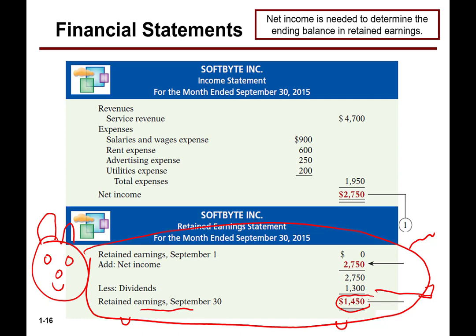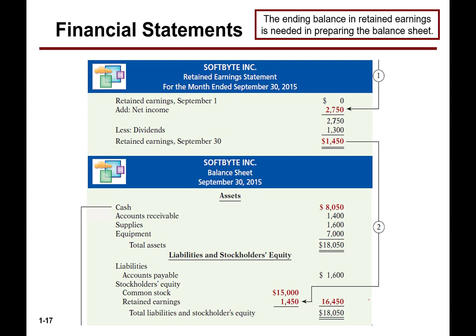The income statement shows revenue minus expenses. Then we have our statement of retained earnings. Then we prepare a balance sheet. They call it a balance sheet because it balances — because assets will equal liabilities plus stockholders' equity. What does it mean if the balance sheet doesn't balance? It means we did something wrong. Nobody goes home until it balances. The balance sheet must balance — that's why they call it a balance sheet.